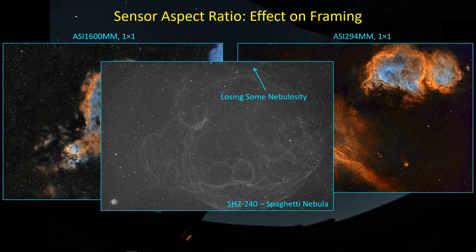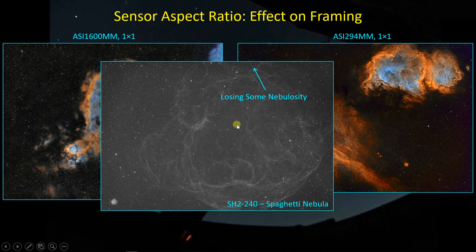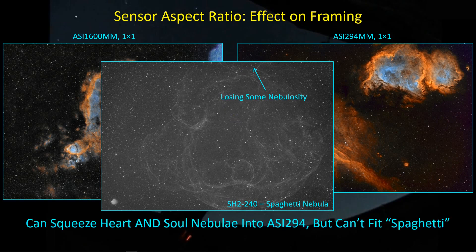It does work to your disadvantage as well. We already saw the picture of the Spaghetti Nebula, and here you can see I've just captured all of the Spaghetti Nebula down here at the bottom of the frame, but because the frame does not have the height, I'm losing something on the height and therefore losing some nebulosity of the Spaghetti Nebula up here. So I guess that's just something you have to learn to live with with this camera.